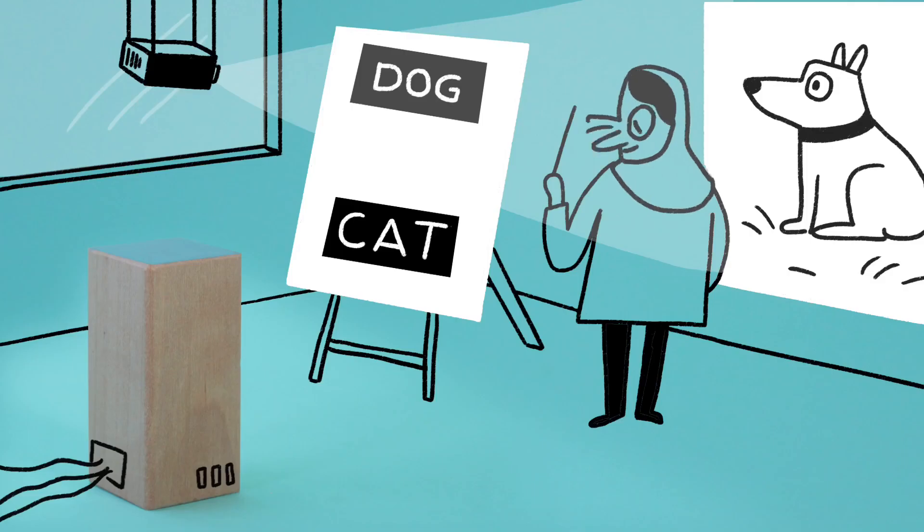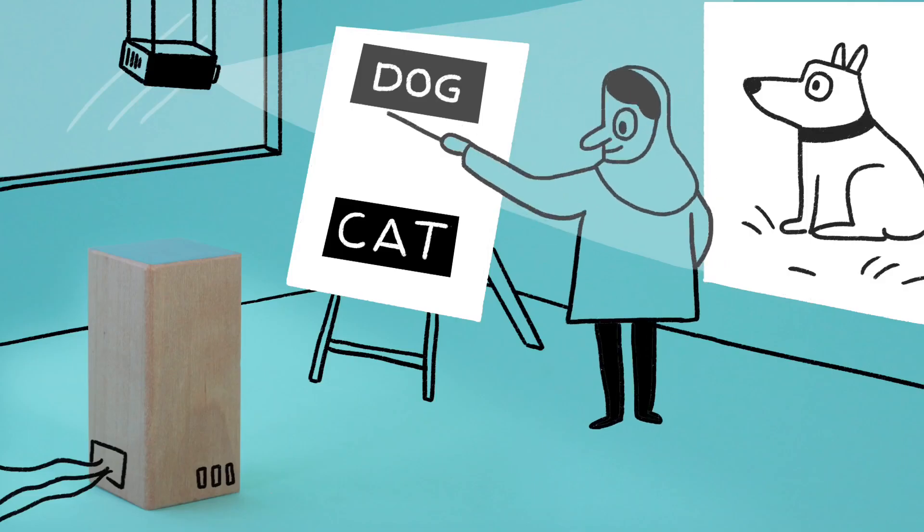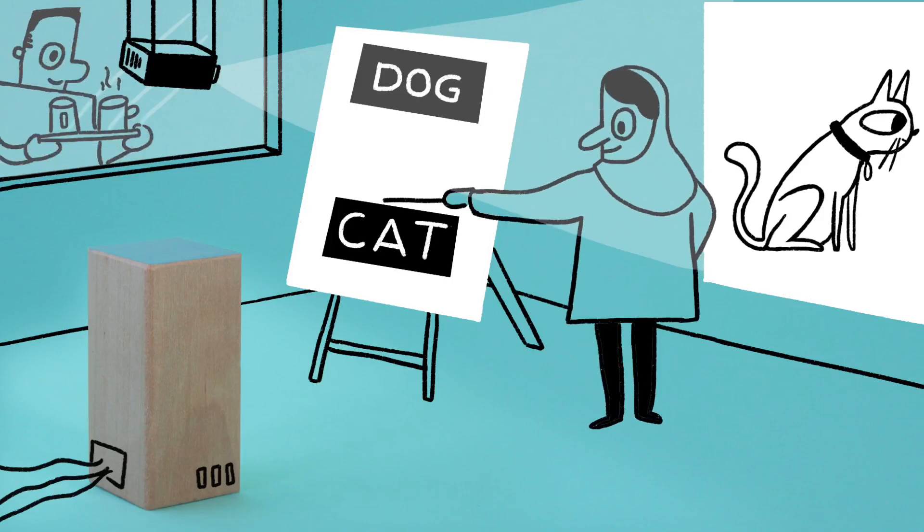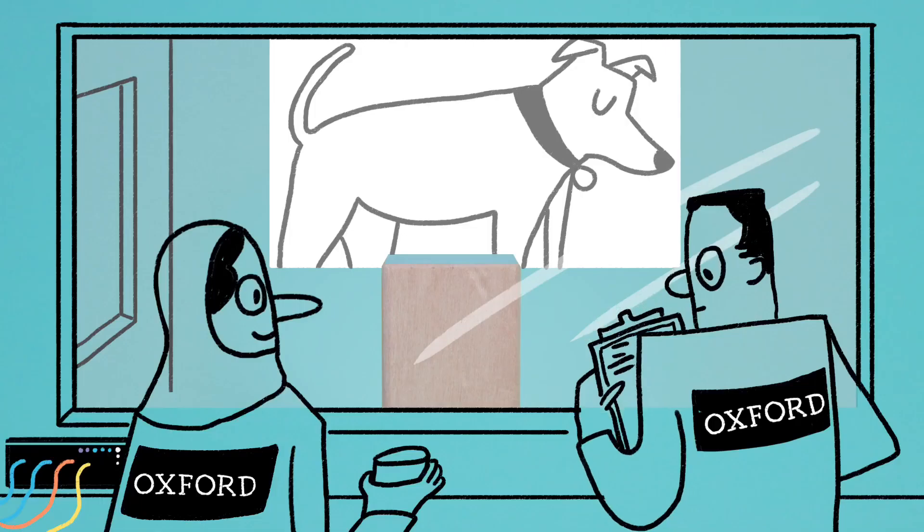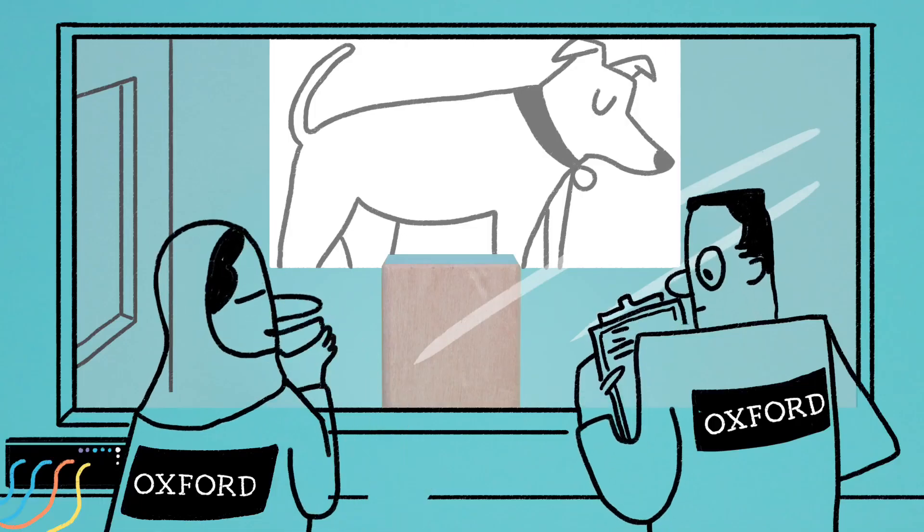You could begin by feeding it images and telling it, this one's a dog, that one's a cat. A computer program to learn will seek statistical patterns within the data that will enable it to recognize a cat or a dog in the future.